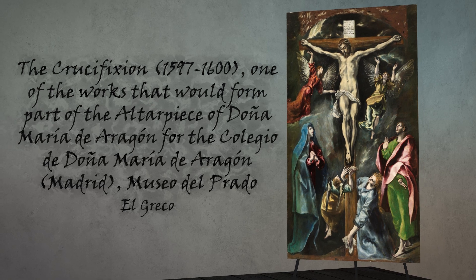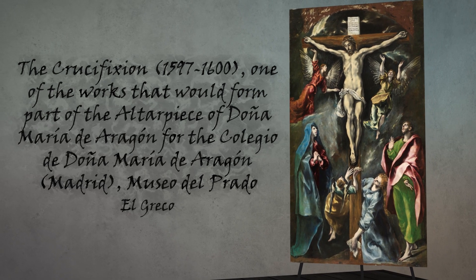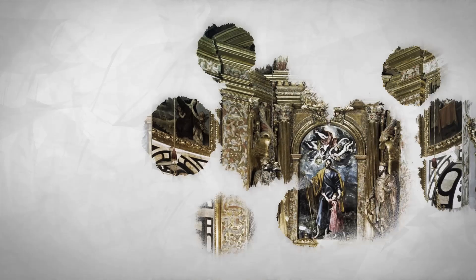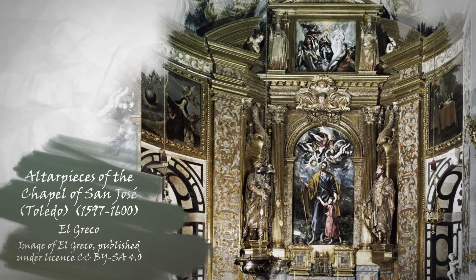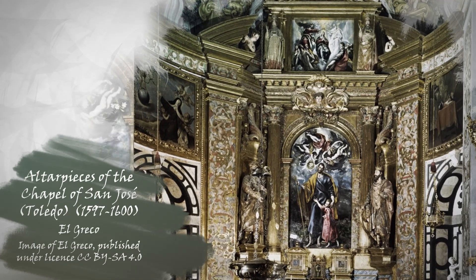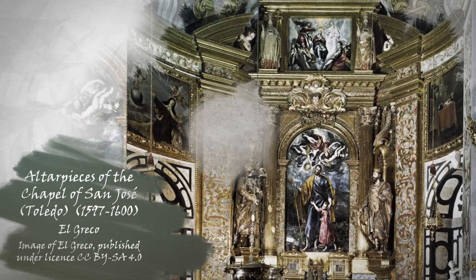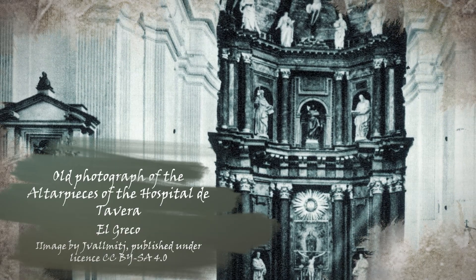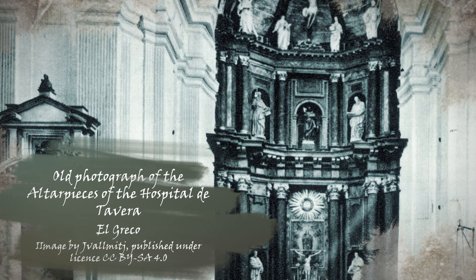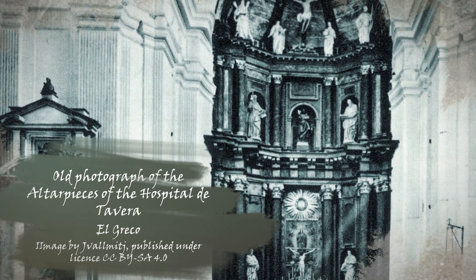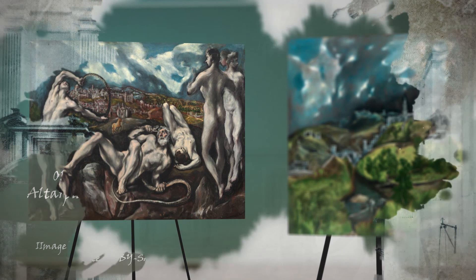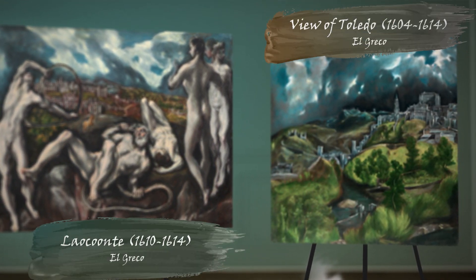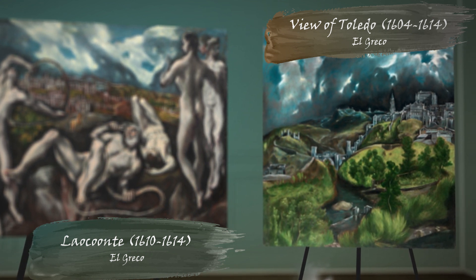In 1596, he received commissions including the altarpiece for the school of Doña Maria de Aragón in Madrid and for the chapel of San José in Toledo. The last work undertaken by El Greco was for the altarpieces in the chapel of the Hospital of Tavera, which, after his death, was continued by his son and other artists. His mythological works include Laocoön and his unique view of Toledo in landscape painting.